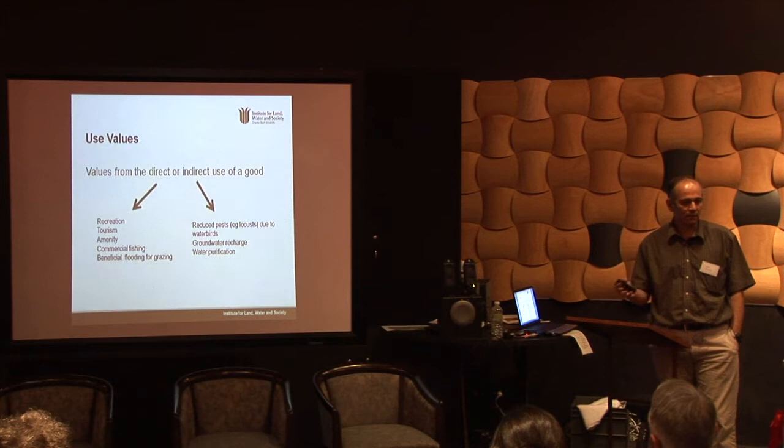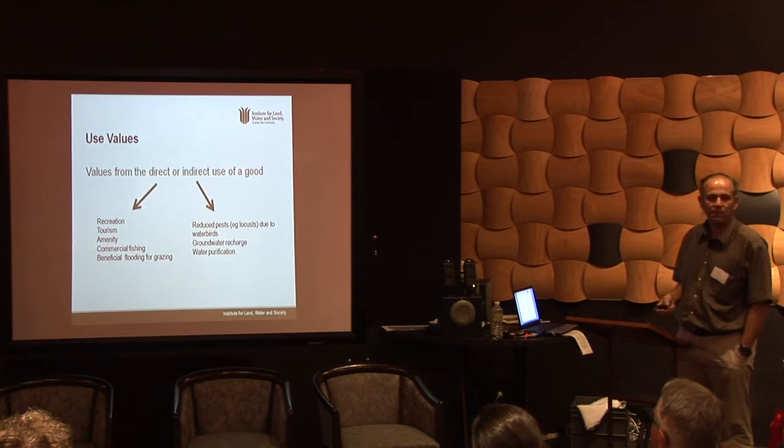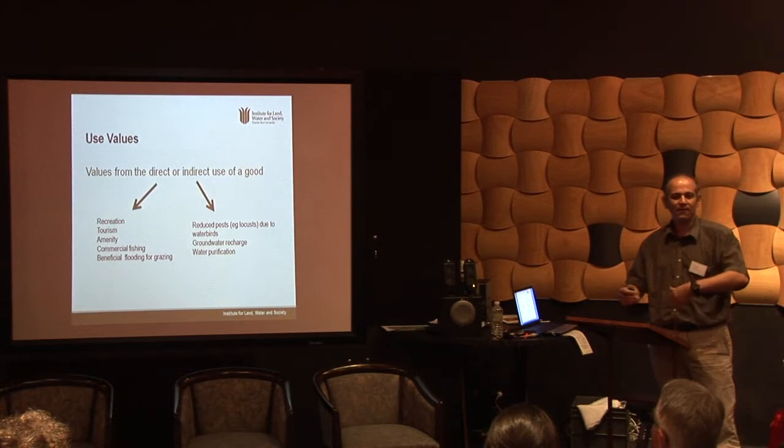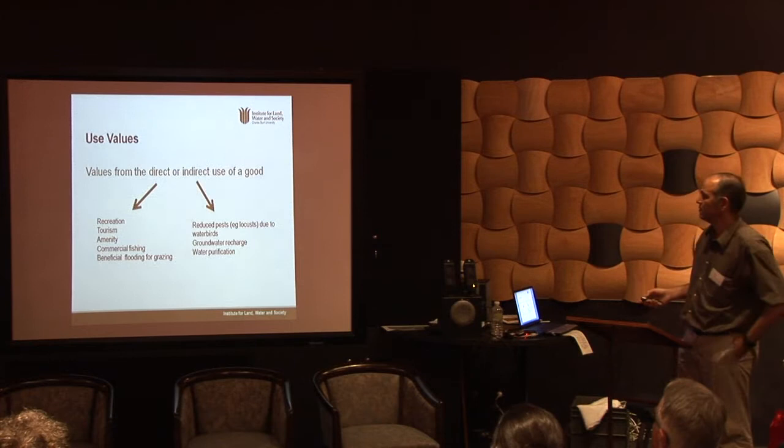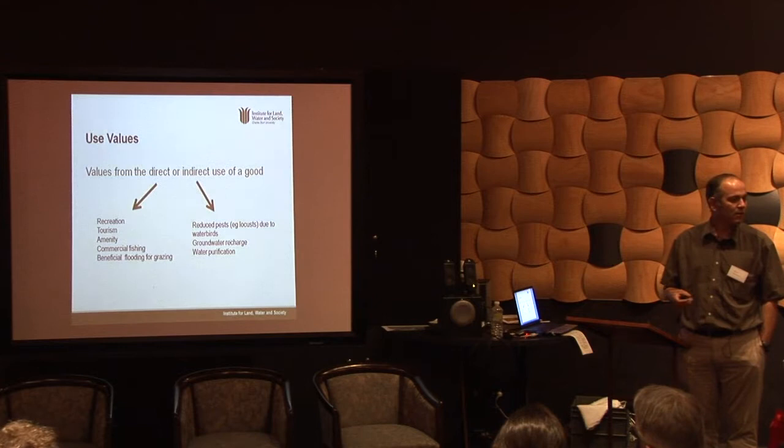Indirect use also occurs. For example, Richard's waterbirds grow healthy, and then there's a locust plague — they might eat all the locusts, which benefits all the farmers and others. Groundwater recharge, wetlands purifying drinking water — these are indirect use benefits, sometimes called ecosystem service values.